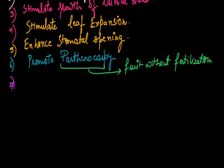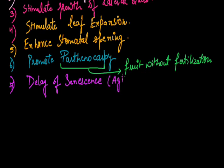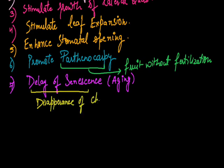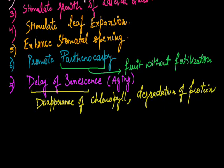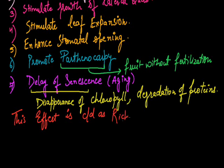Next, the most important effect of cytokinin is it also delays senescence. As I have already told you, the senescence is the aging process. And due to the delay of senescence, two symptoms can be seen. These are the disappearance of chlorophyll, that is the photosynthetic pigment, and degradation of proteins. These are the two symptoms of senescence and this effect is called as Richmond-Lang effect.